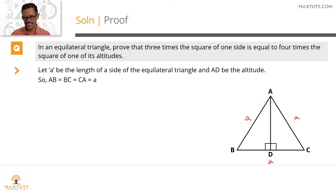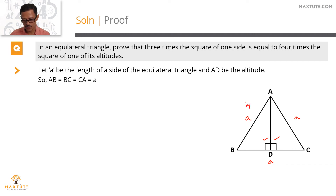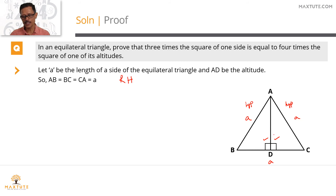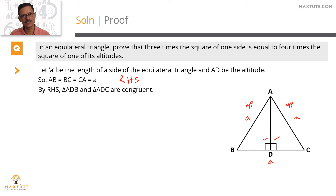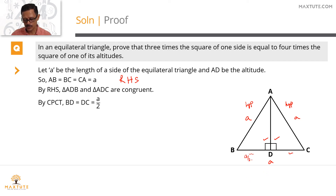Looking at triangles ADB and ADC: both are right-angled triangles. The hypotenuse of triangle ADB is AB = A, and the hypotenuse of triangle ADC is AC = A — both hypotenuses are equal. The common perpendicular side is AD. By RHS congruence, triangles ADB and ADC are congruent. By CPCT, BD = DC, so BD = DC = A/2.